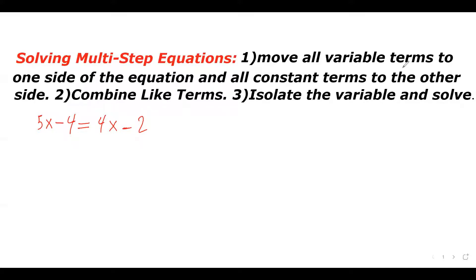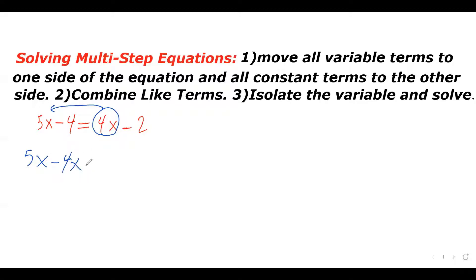Here is the first one: 5x minus 4 equals 4x minus 2. I have variables on both sides of the equation. The first thing we need to do is to move all the variable terms to one side. I have 5x on the left side and 4x on the right side. I want to move this 4x from the right side to the left side. On the right side, I have a negative 2, which is a constant term.